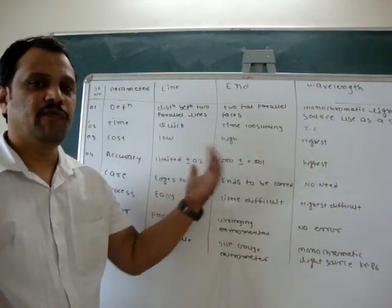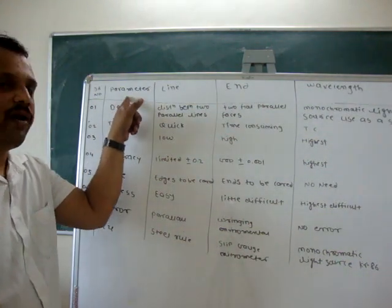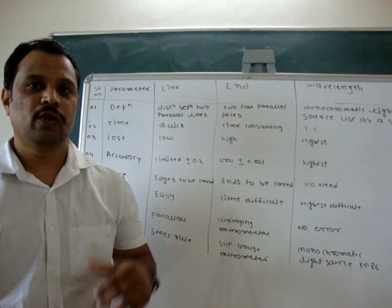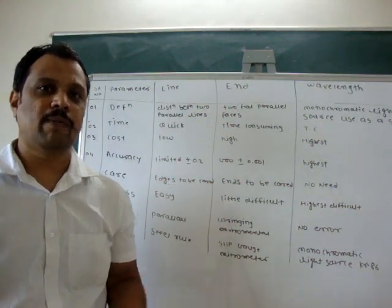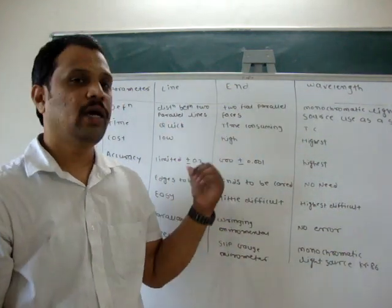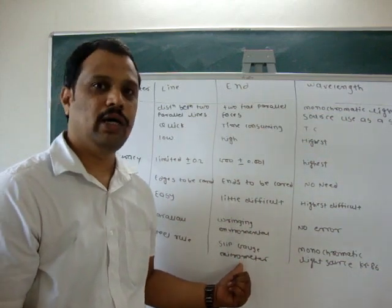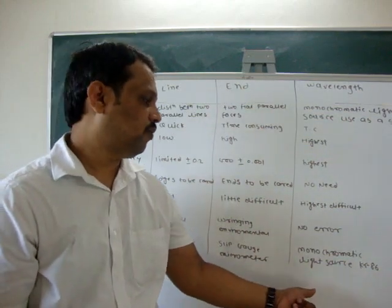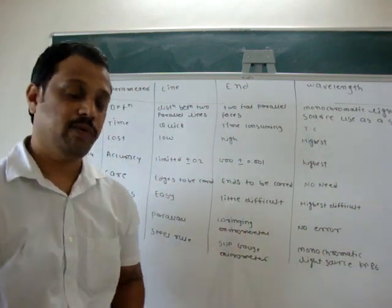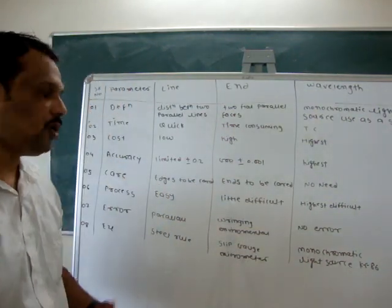For doing the difference between line standard and wavelength standard, I have added one parameter. While taking a difference of line standard, end standard, and wavelength standard, you have to keep one example in front of you. For line standard, picture a steel rule; for end standard, take a micrometer; and for wavelength standard, take a monochromatic light source. By doing this, you can easily differentiate between these.